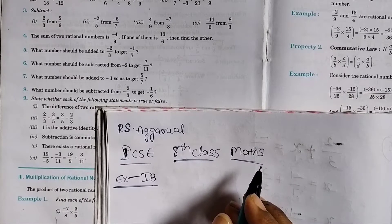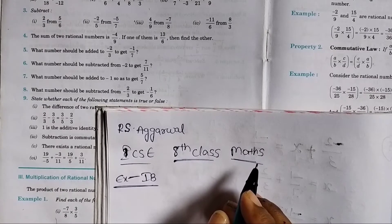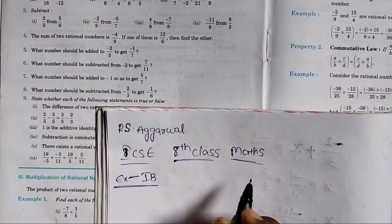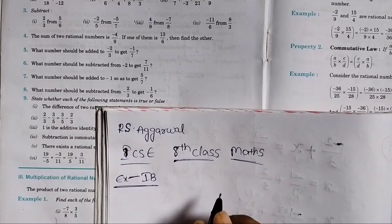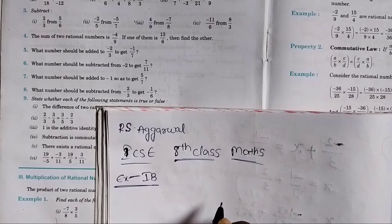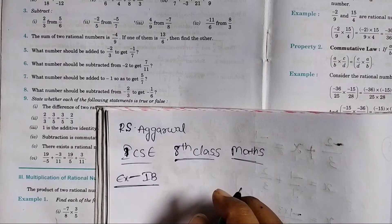What number should be added to minus 1 so that I get 5 by 7?